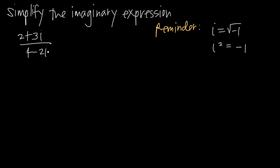When we talk about the conjugate of something, we're talking about a binomial — two terms separated by an addition or subtraction sign. For example, 4 minus 2i is a binomial because we have two terms, 4 and 2i, separated by a subtraction sign. The conjugate of this binomial uses those same two terms, but we flip the sign in the middle. So the conjugate of 4 minus 2i is 4 plus 2i.